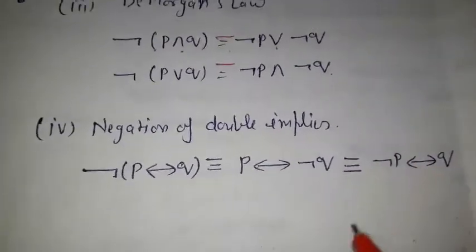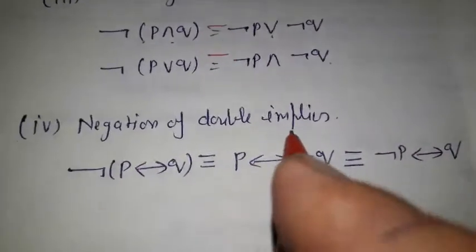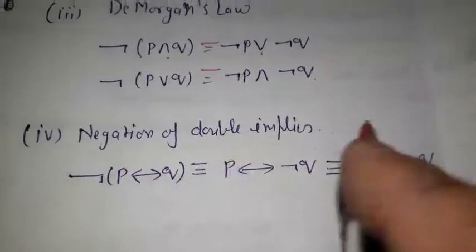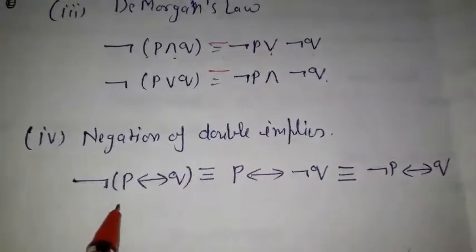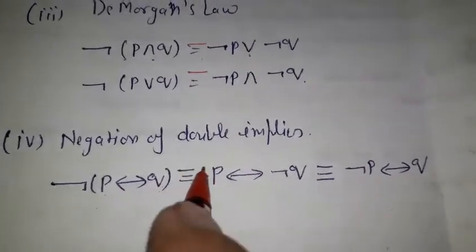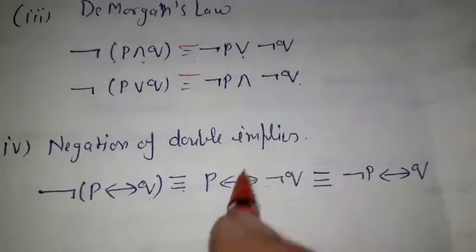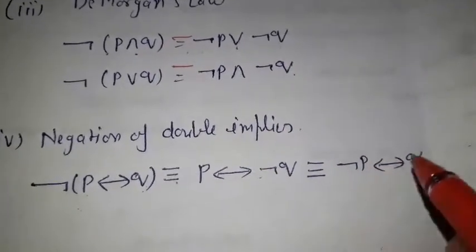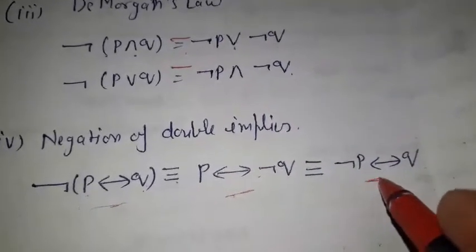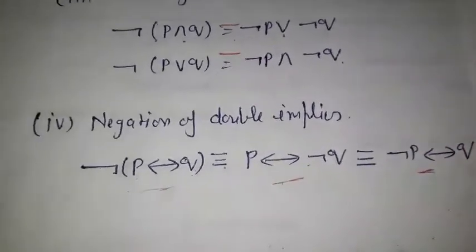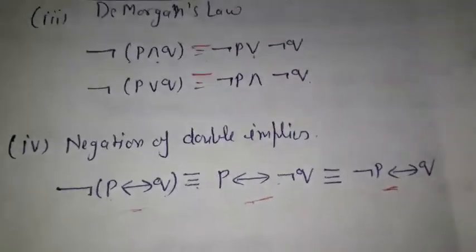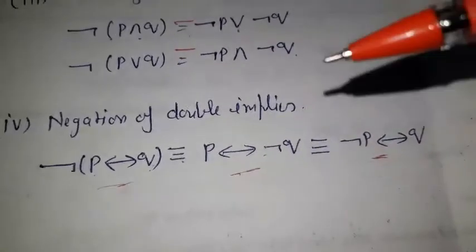The negation of the biconditional — that is, the double implication: not (P double implies Q) is equivalent to P double implies not Q, or equivalently, not P double implies Q. So when we need to form the negation of a statement, we use these properties to help derive the negation.